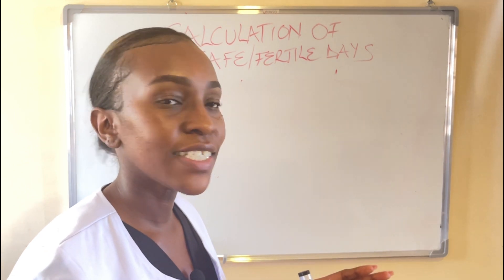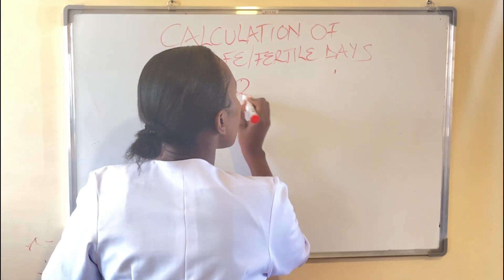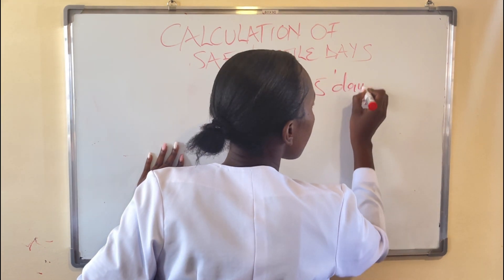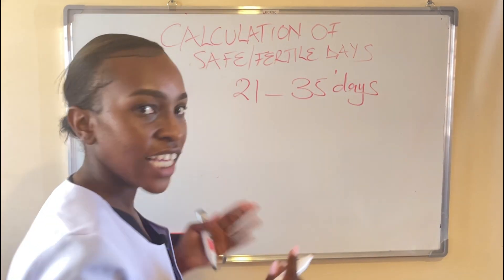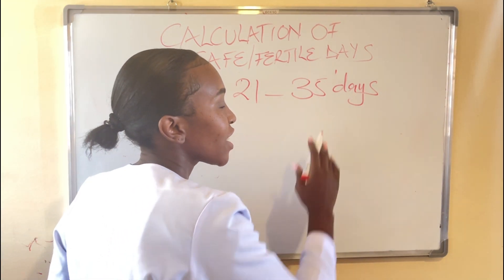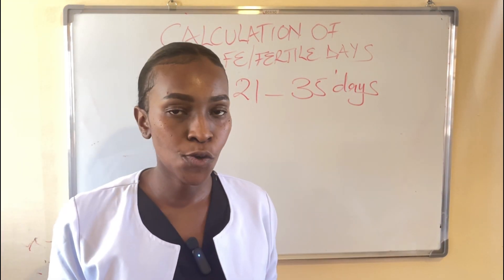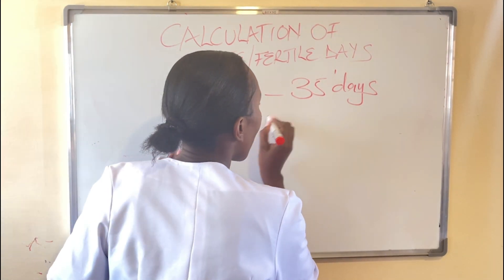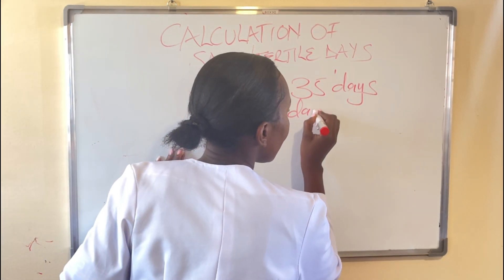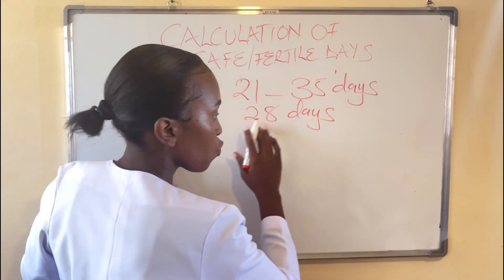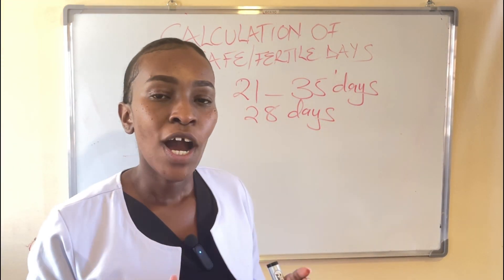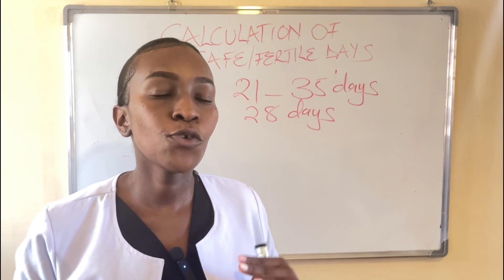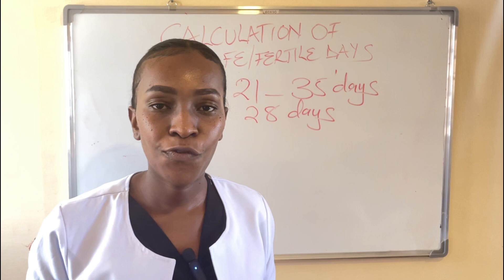Most women usually have their cycle in between 21 to 35 days. If your cycle is anything between 21 days and 35 days, we regard that as normal, with a majority of these women having their cycle at 28 days. This is the cycle we find most women having — 28 days. After you know your cycle, I am going to show you a short formula that you can use to calculate your safe days and your fertile days.